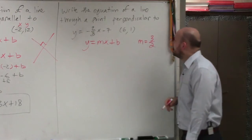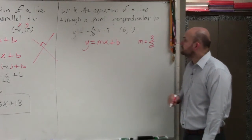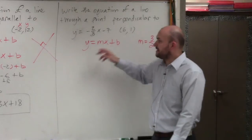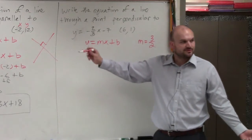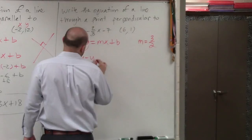All right? So we have 3/2. Now what I'm going to do is rather than doing like I did over here, I'm going to use point-slope form, which looks like this.